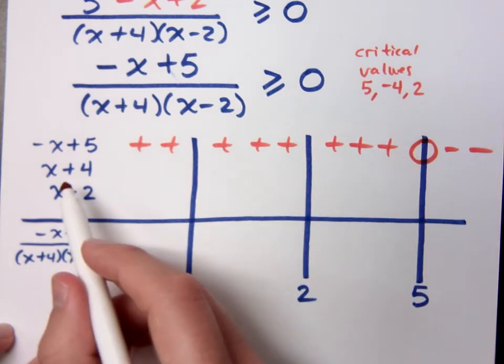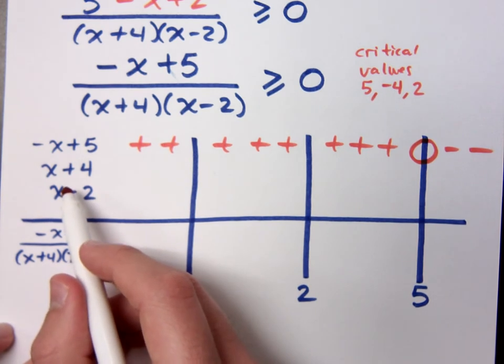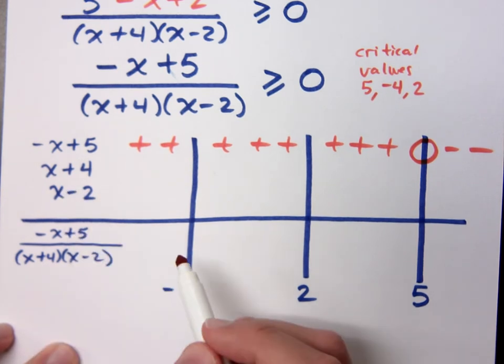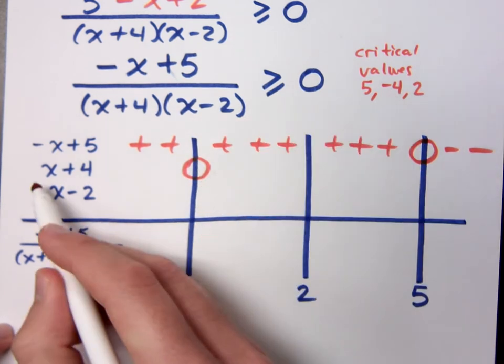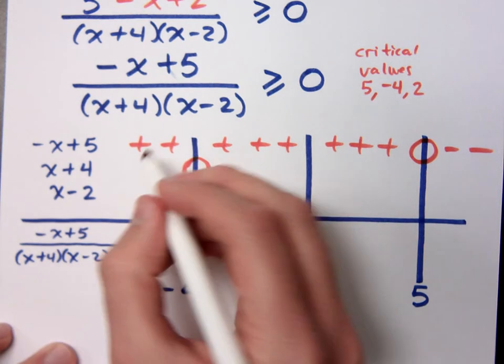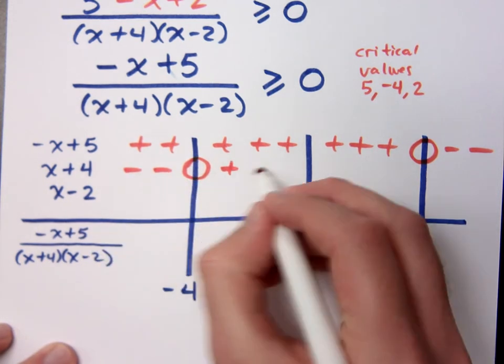What about x plus 4? Who is his critical value? Who is his gatekeeper? Negative 4, so that's 0 right here. Now, since this has a positive coefficient, what signs are on the left? Negative. And what's on the right? Positives.